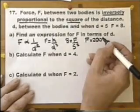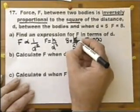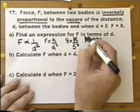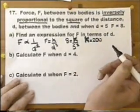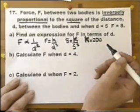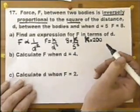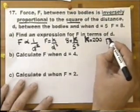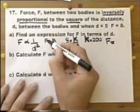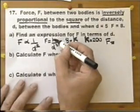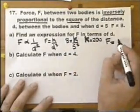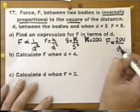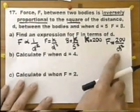I said F instead of K — I've been careless. So K equals 200. The constant of proportionality is 200. So we have: Force equals the constant of proportionality divided by D squared, and we now know the constant of proportionality is 200. So F equals 200 over D squared. That's what's required for part A.